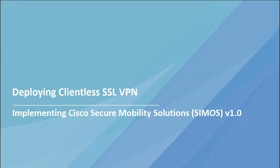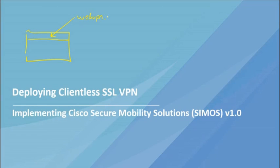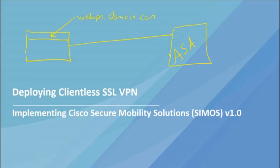We're going to start looking at remote access VPN, beginning with the simplest approach for users — clientless SSL VPN. If users want a VPN into the office, all they need is a browser. They type something like 'webvpn.yourdomain.com' in the address bar and are greeted by a web server, which in most circumstances is going to be an ASA, though IOS can do this as well.